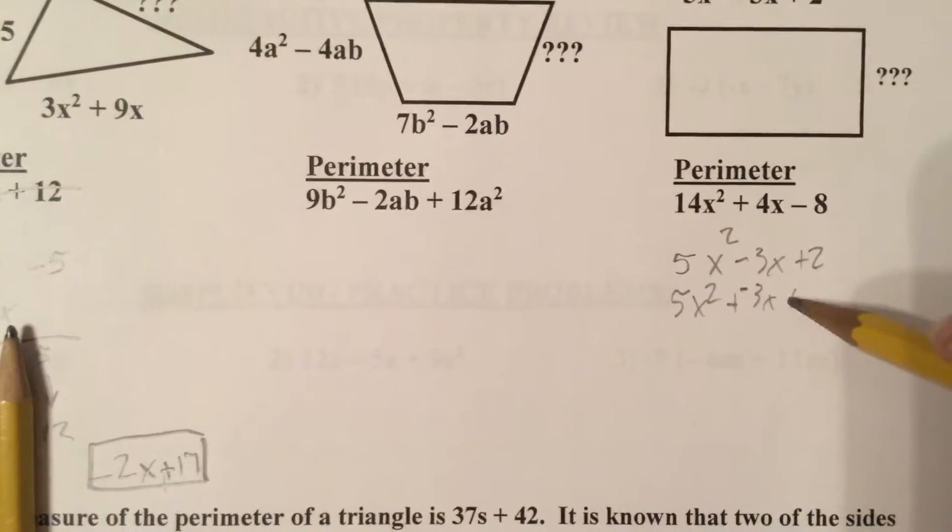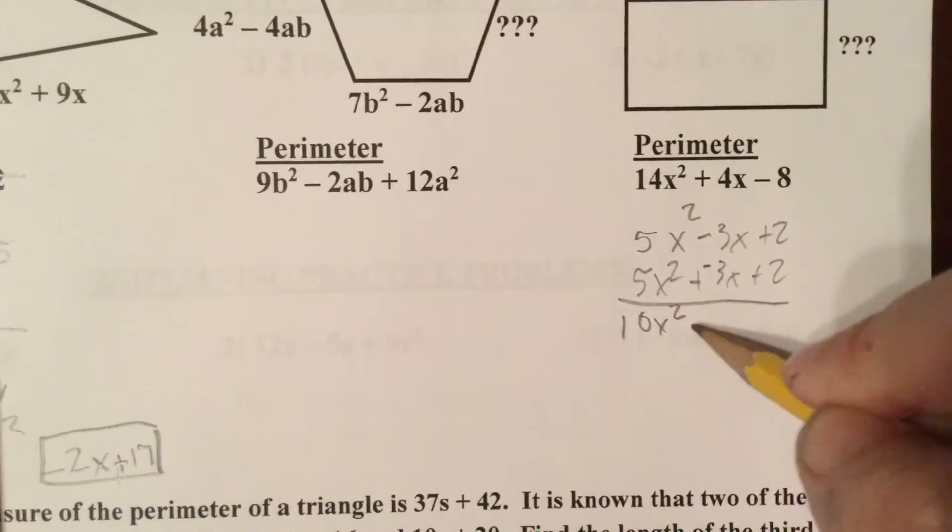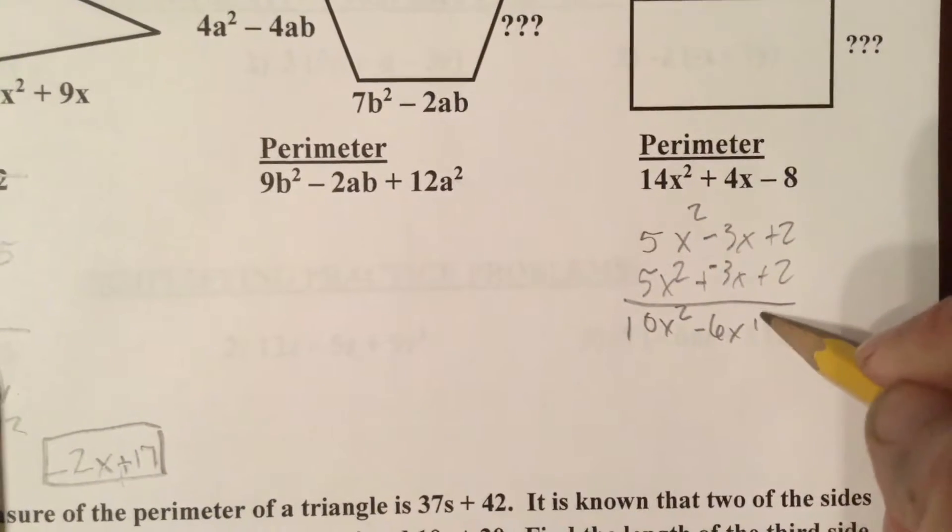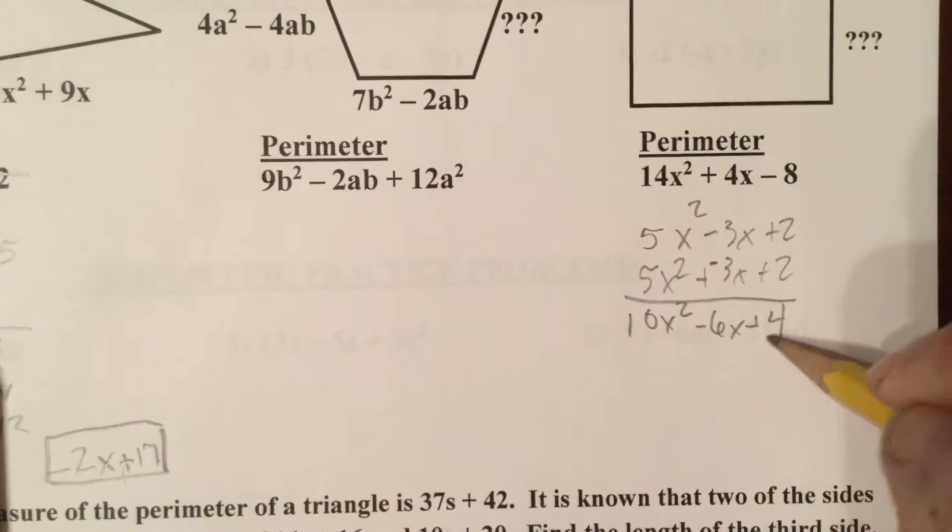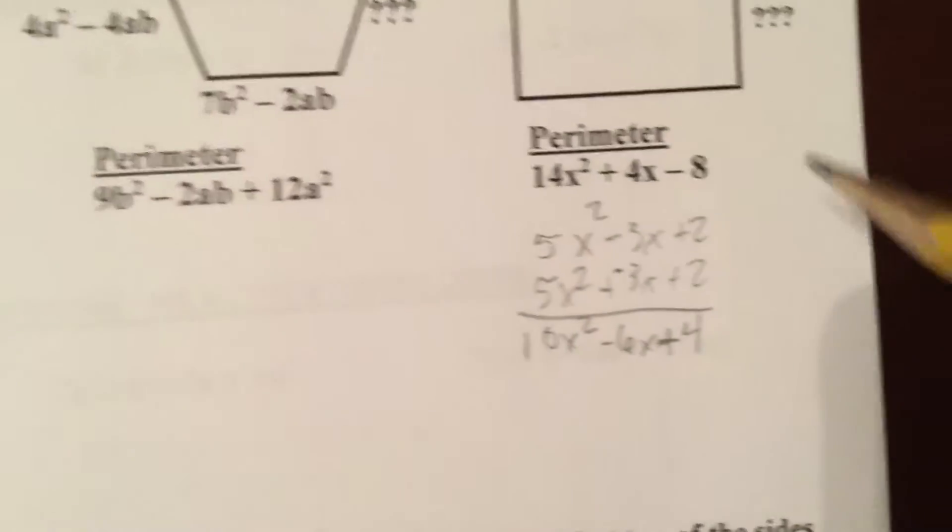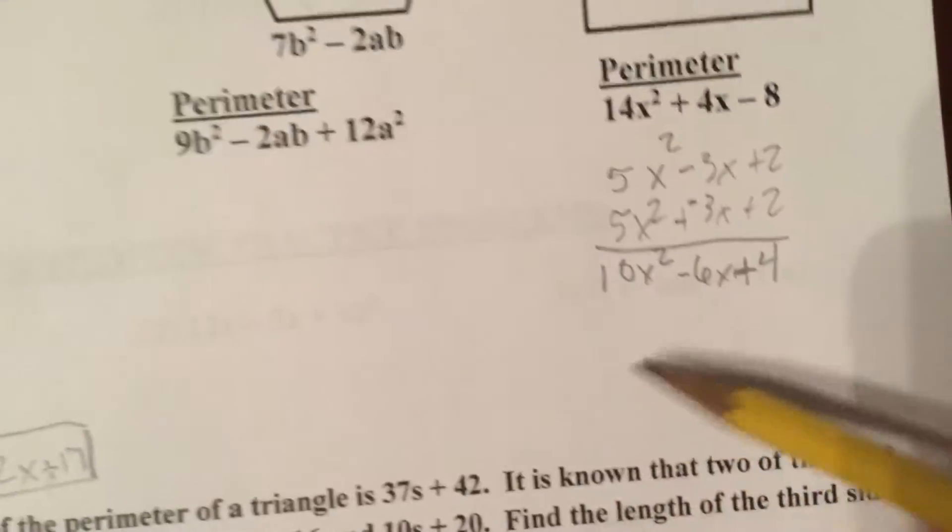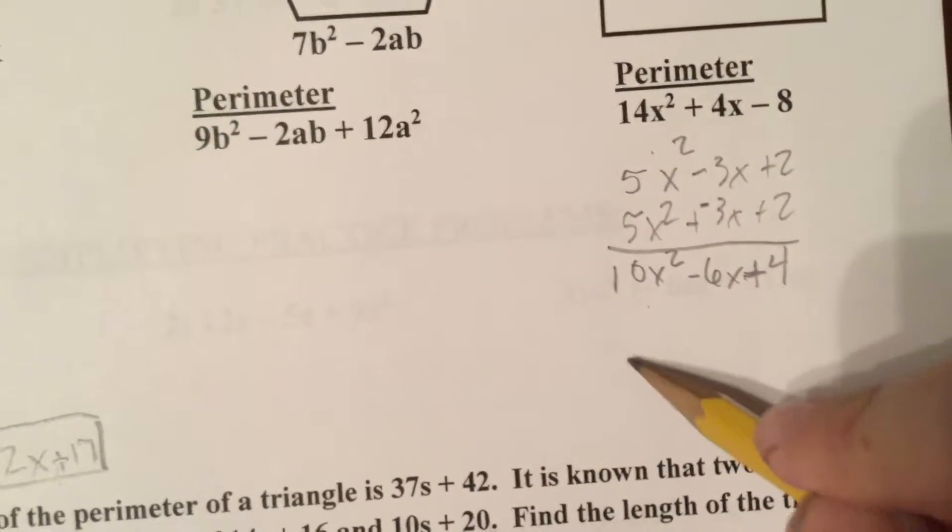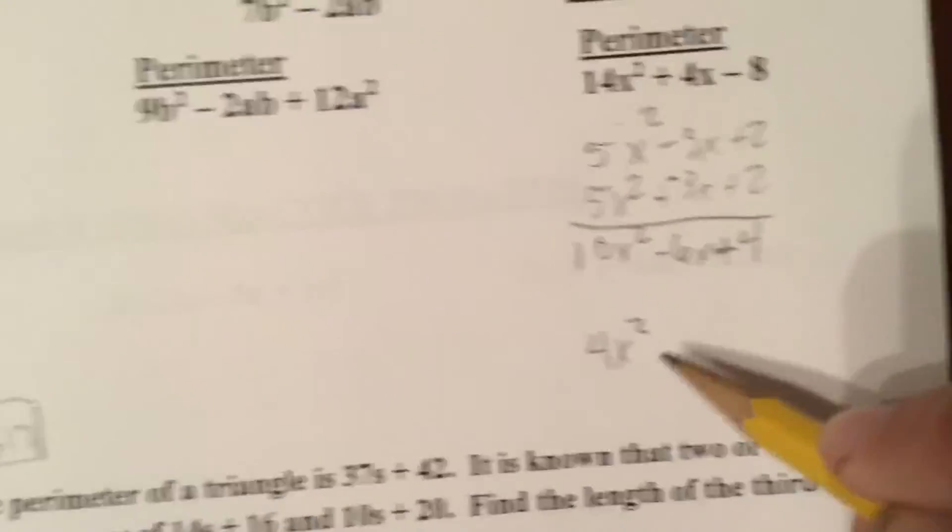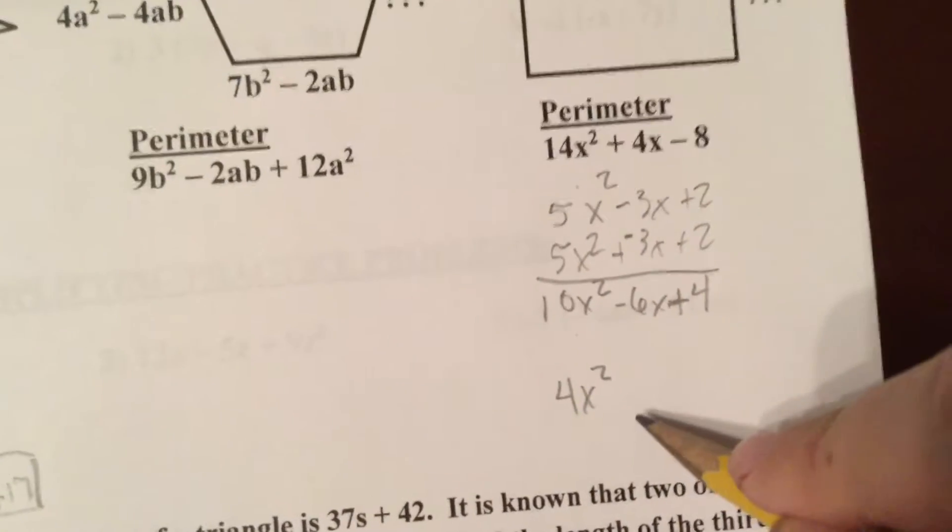Now similar to the triangle, I compare this answer which is adding two of my four sides and I say well from 10 to 14 I'm missing 4x squared, from negative 6 to 4 I would have to add...